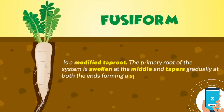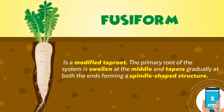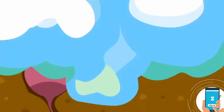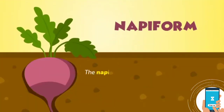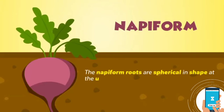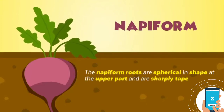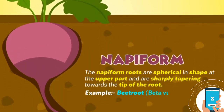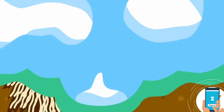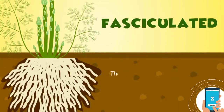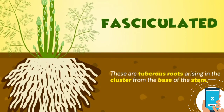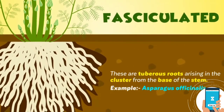Example of fusiform: radish, Raphanus sativus. Napiform roots are spherical in shape at the upper part and sharply tapering towards the tip of the root. Fasciculated: these are tuberous roots arising in a cluster from the base of the stem. Example: Asparagus officinalis.